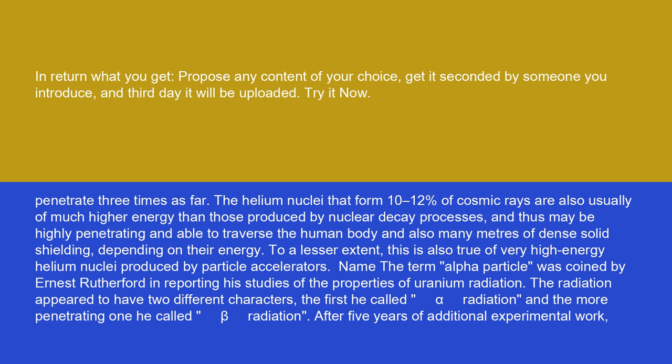The term alpha particle was coined by Ernest Rutherford in reporting his studies of the properties of uranium radiation. The radiation appeared to have two different characters. The first he called alpha radiation, and the more penetrating one he called beta radiation.